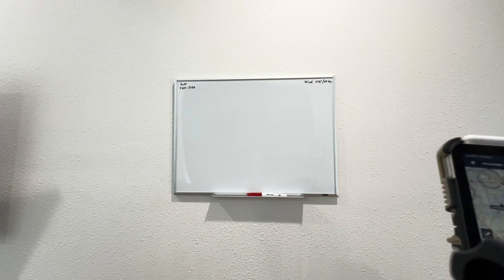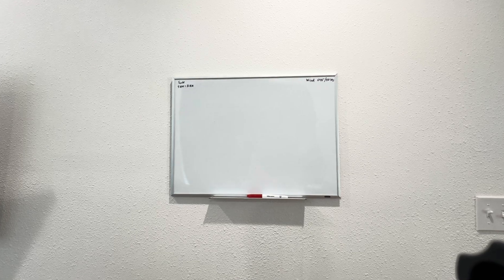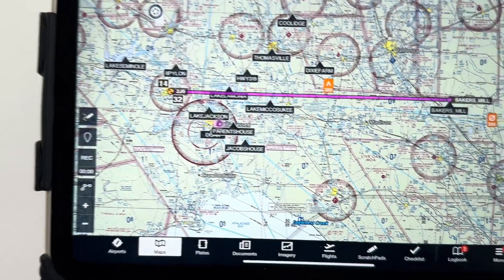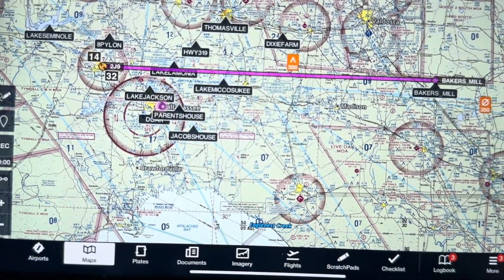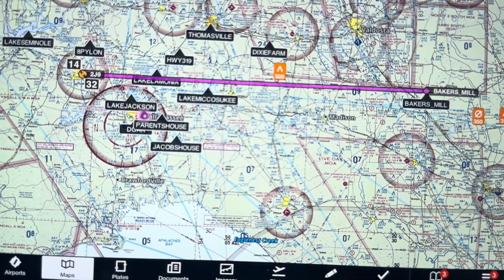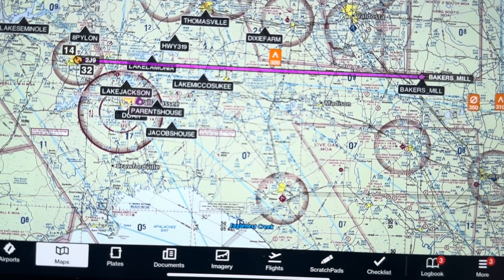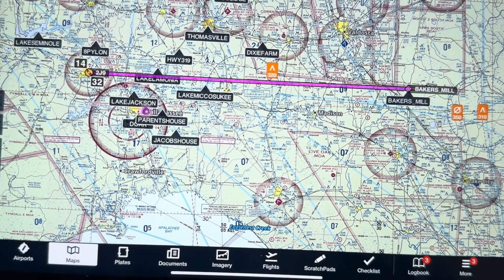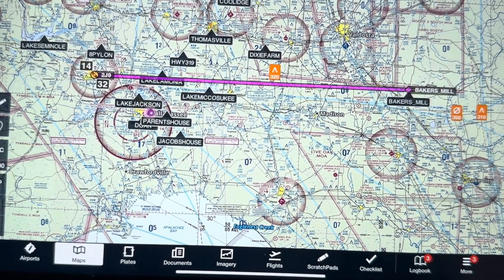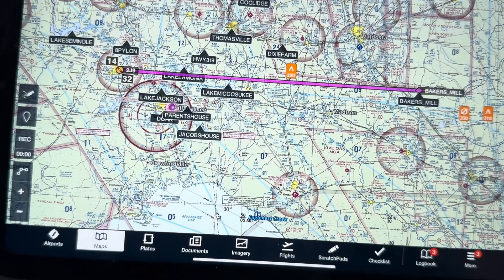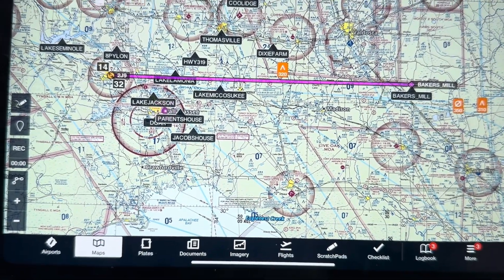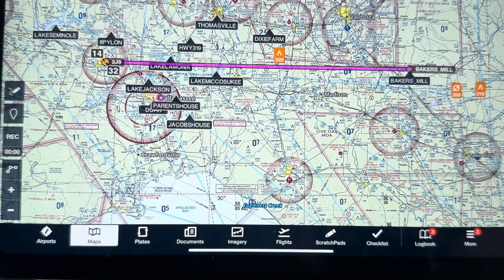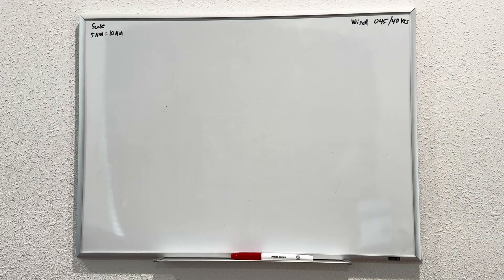So here's my sectional chart. We are going to go from 2J9, which is Quincy, Florida, and we're going to go east to Baker's Mill. That is exactly 84 nautical miles. The reason the distance is important is because there's a scale on the bottom of your paper chart that you need to figure out to know your distance. So go ahead and write that down, distance 84 nautical miles, and we'll get started on the whiteboard.